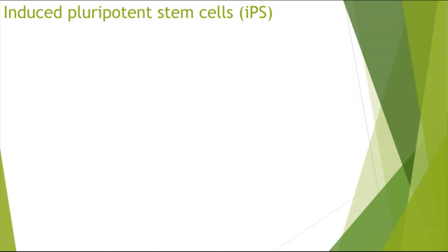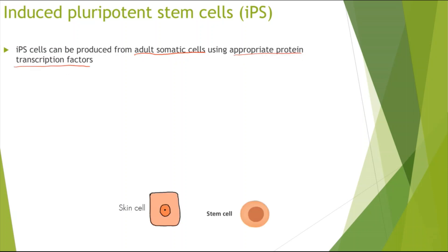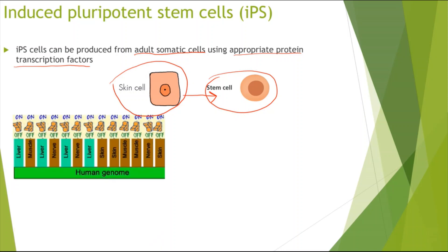Alright, so now looking at induced pluripotent stem cells or IPS cells. So these IPS cells can be produced from adult somatic cells or adult body cells using appropriate protein transcription factors. So what we're essentially doing is we're getting for example a skin cell which is a body cell or a somatic cell and that's specialized. And what we're doing using transcription factors, we are converting that into stem cells which are unspecialized cells. So before we looked at converting from going from a specialized stem cell into an unspecialized cell. Now we're doing the complete opposite.